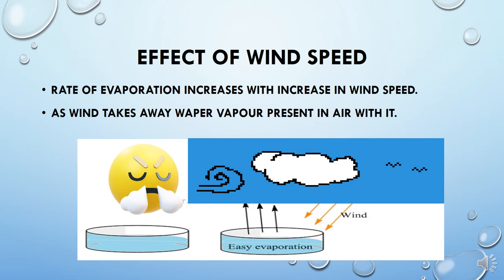Next is wind speed. When wind blows fast, it carries away water vapor with it, because the air that is already saturated with water vapor gets blown away by the moving wind. When wind blows fast, it carries all the water vapor present in that particular area, allowing the liquid to evaporate faster compared to an area where wind is not blowing. This is how wind speed increases the rate of evaporation.